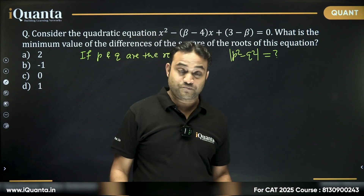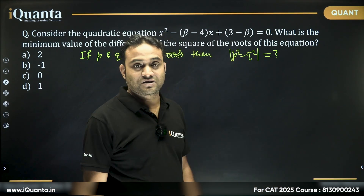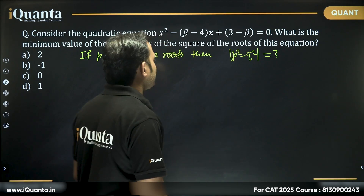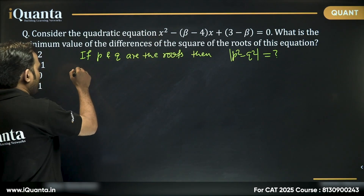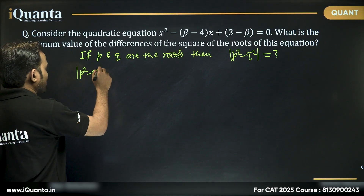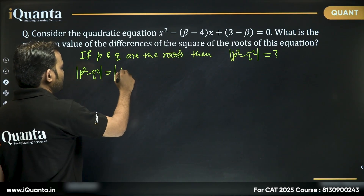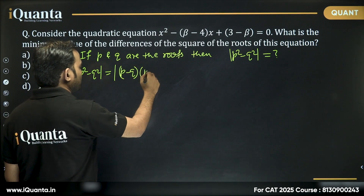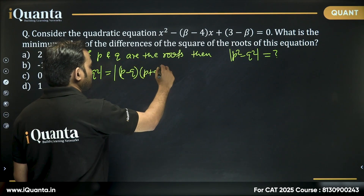The difference is always positive, that is why we are taking the mod. Now, |p² minus q²| is nothing but |p minus q| times |p plus q|.